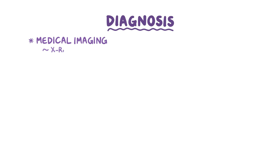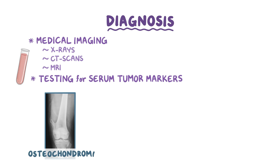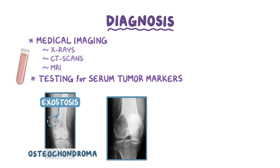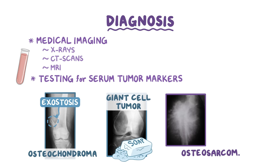The diagnosis of bone tumors starts with medical imaging like x-rays, CT scans, and MRI imaging, or testing for serum tumor markers specific for each type of tumor. Some tumors also have classic x-ray findings. For example, osteochondroma causes exostoses, while the giant cell tumor forms multicystic bone lesions that look like soap bubbles. Osteosarcoma forms lytic bone lesions referred to as a sunburst appearance, because the radiating tumor streaks look like sun rays.